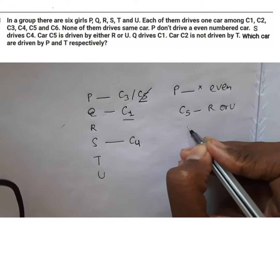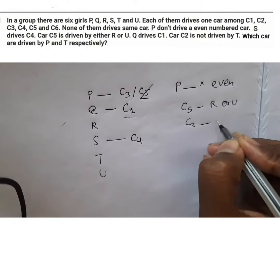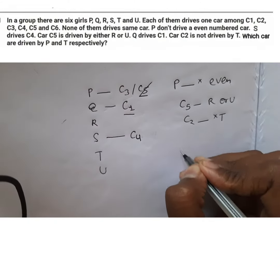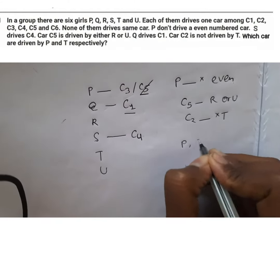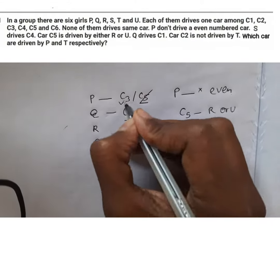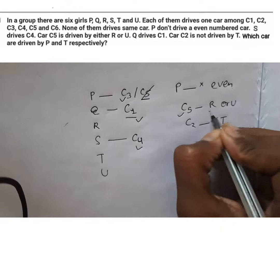And, it is given that C2 is not driven by T. Now, we have to find out P and T. See, C1 is here, C3 is here, C5 is here.